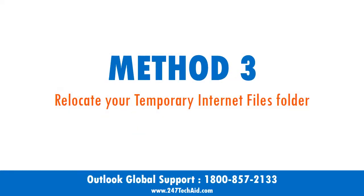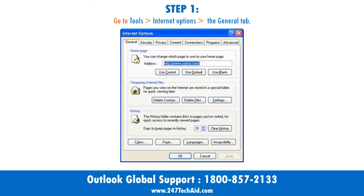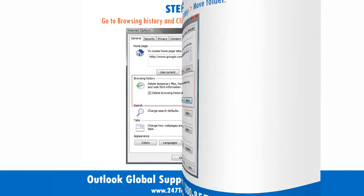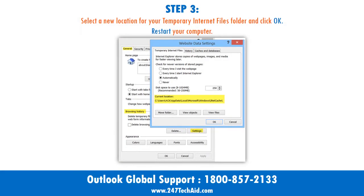Method 3: Relocate your temporary internet files folder. Step 1: Go to Tools, Internet Options, the General tab. Step 2: Go to Browsing History and click on Settings, then Move Folder.